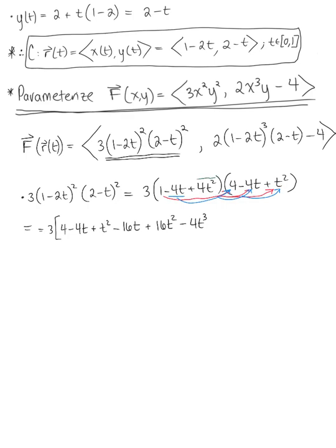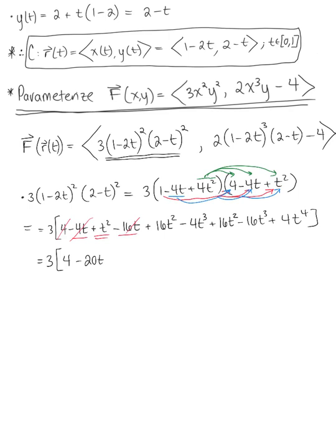Distributing positive 4t squared through gives plus 16t squared minus 16t cubed plus 4t to the fourth. Before distributing 3, let's combine like terms. The constant is 4; the t terms: minus 4t minus 16t gives minus 20t; the squared terms: t squared plus 16t squared plus 16t squared gives 33t squared; the cubic terms: minus 4t cubed minus 16t cubed gives minus 20t cubed; plus 4t to the fourth.